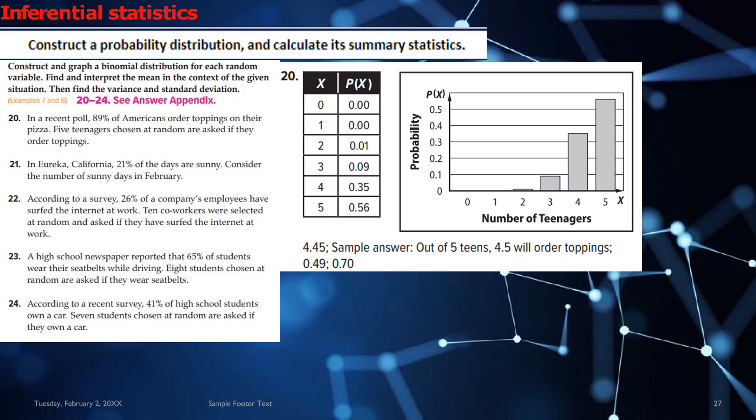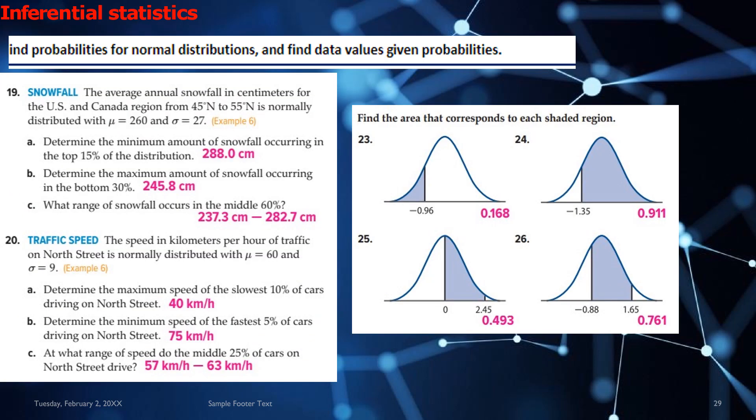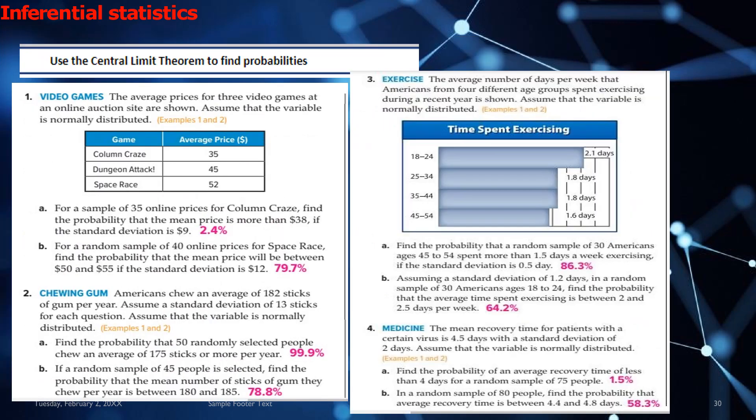And for inferential statistics, you may get a question on constructing probability distribution and calculating its summary statistics. So the questions 20 to 24, we have provided the sample answers here. So you can have a look and you can find the probabilities for normal distribution given the data values using these questions. So the graph is also given, the value is also given. So solutions are in pink for you for the central limit theorem to find probabilities as well. So make benefit from the answer key.